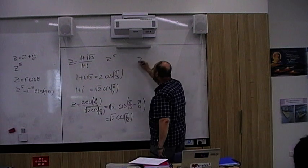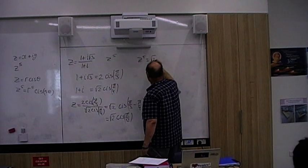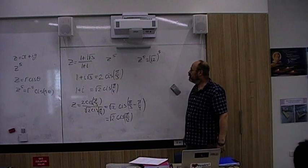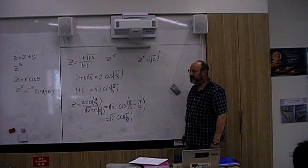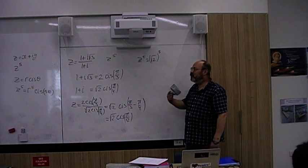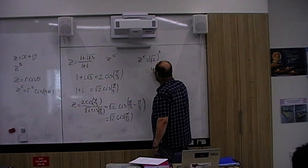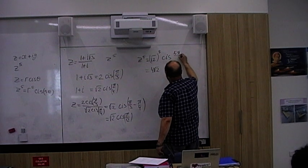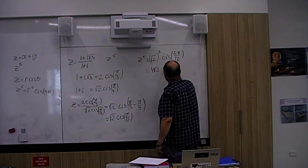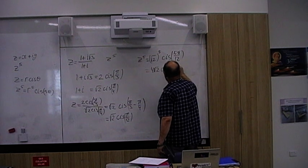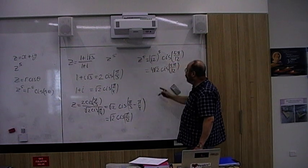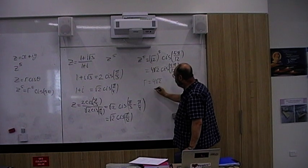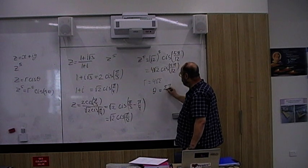Now we put it into the power of 5. z to the power of 5 will equal root 2 to the power of 5. Root 2 squared is 2, squared again is 4, times another root 2 is 4 root 2. So we get 4 root 2 cis 5 pi over 12. The answer is r equals 4 root 2 and theta equals 5 pi over 12.